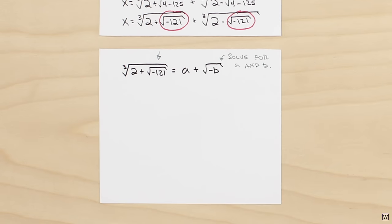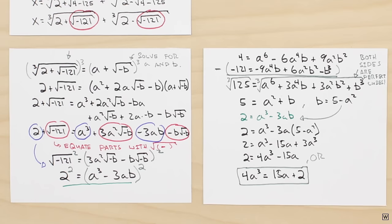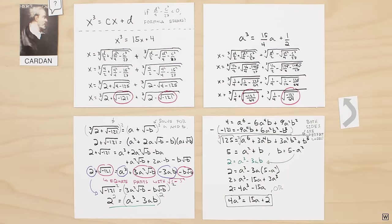Cardan came close to finding a way to make his formula work, but got stuck in an algebraic loop where a bunch of work would just lead him right back to where he started.